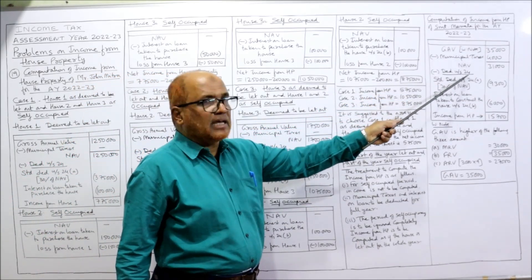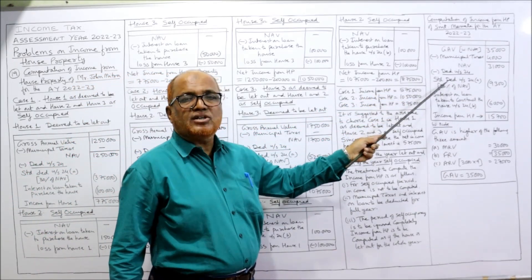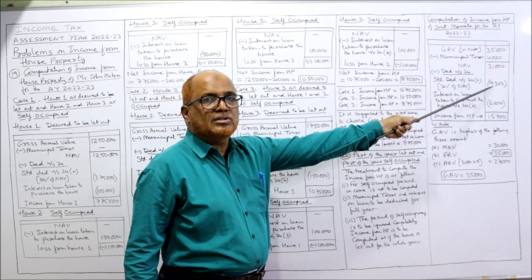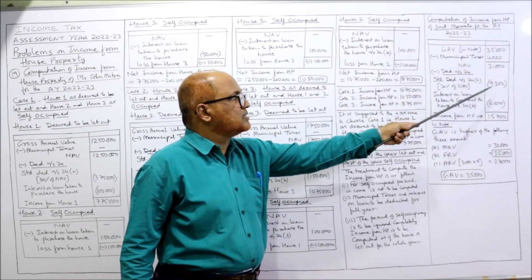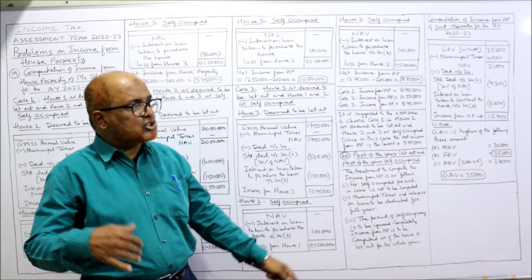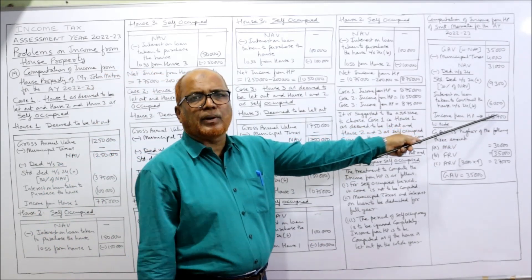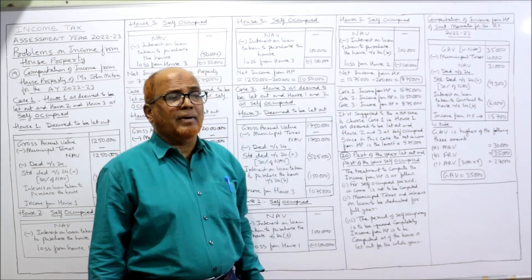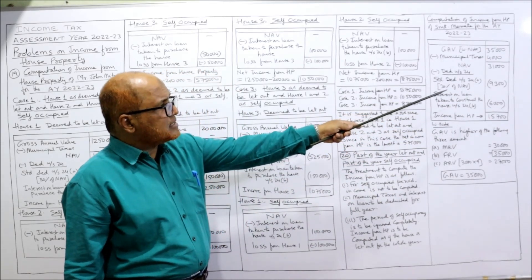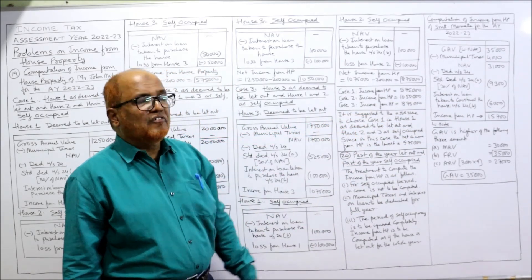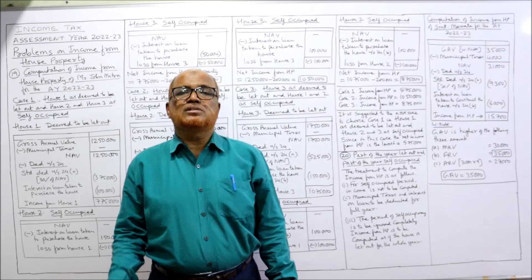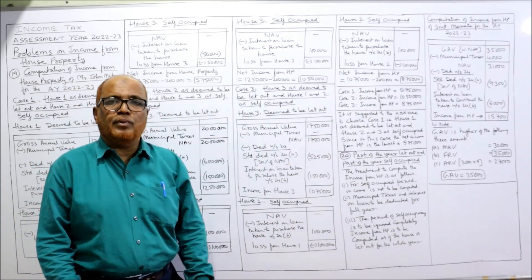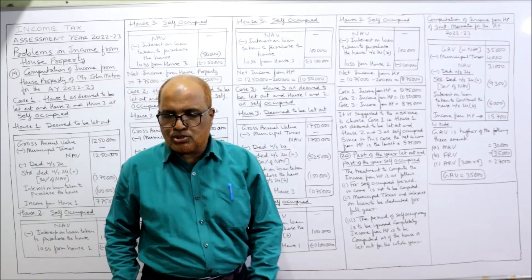Deductions from NAV: Standard deduction under Section 24(a) — 30% of NAV = 9,300. Interest on loan taken to construct the house: 6,000 (given directly, fully allowed). Income from house property: 31,000 minus 9,300 minus 6,000 = 15,700. That is the complete computation for Problem 20.